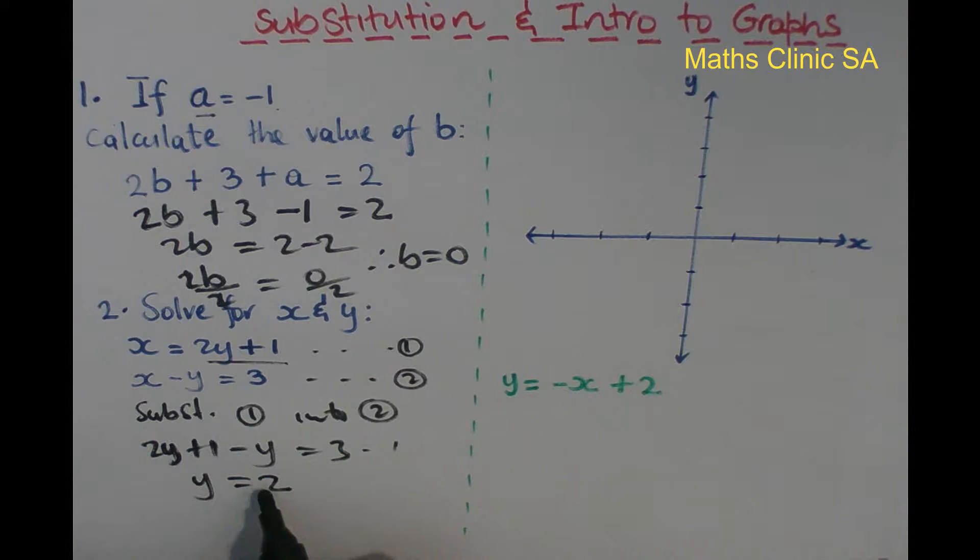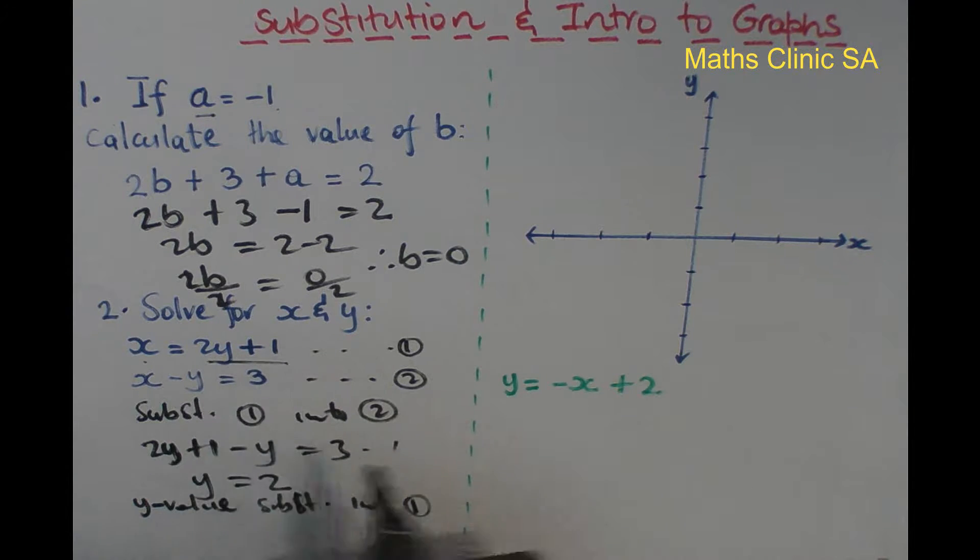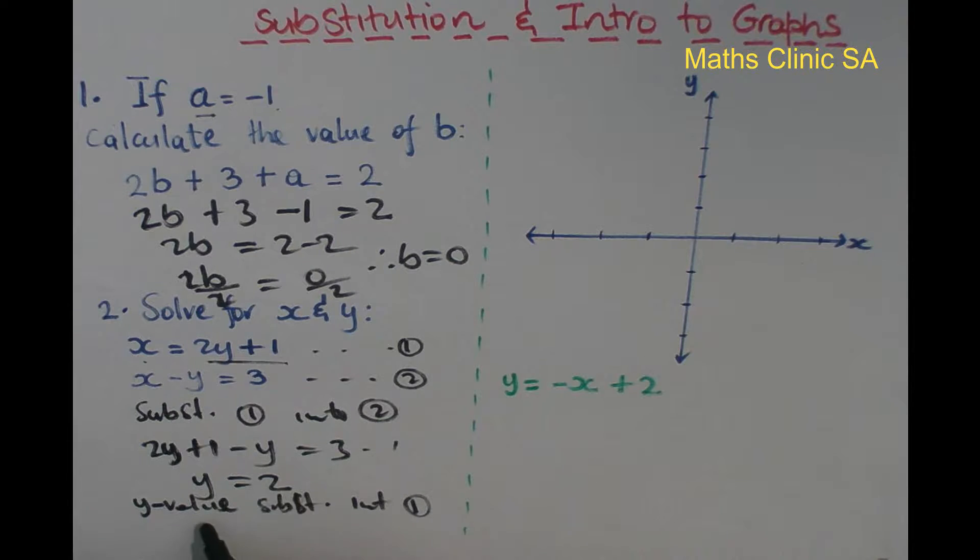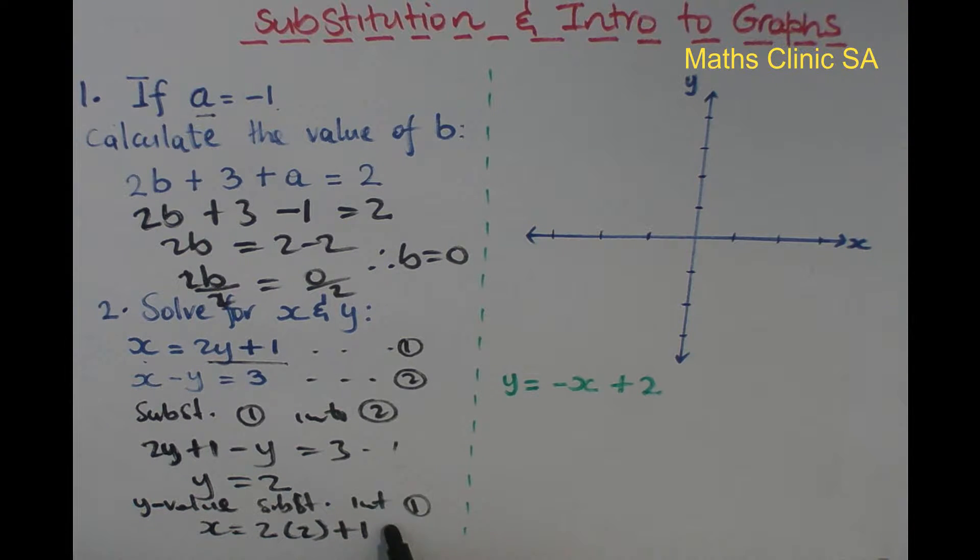Now substituting y = 2 into equation 1: x = 2y + 1 = 2(2) + 1 = 4 + 1 = 5. So x = 5 and y = 2.